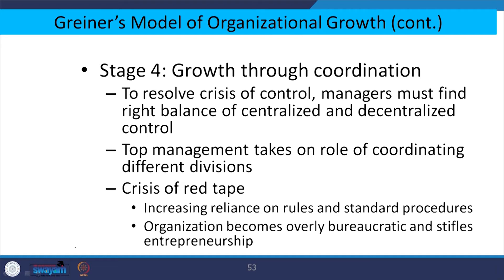There must be delegation of power to strike a balance between the need for professional management and opportunity for entrepreneurship. A crisis of control emerges as power struggles over resources develop between top level and lower level management. In the next stage, the organization grows through coordination — managers must find the right balance of centralization and decentralization, with top management taking on a coordinating role across different divisions.